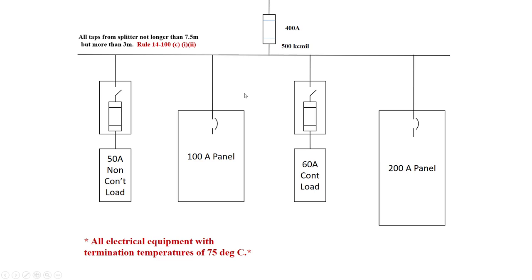As soon as we go over three meters but not more than seven and a half, this tap conductor or all of these tap conductors must have a minimum of one-third the ampacity of the feeder conductor. In this case, the feeder conductor is 500 KC mil.